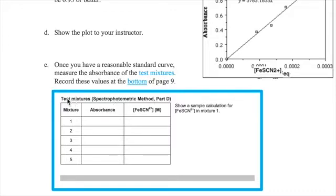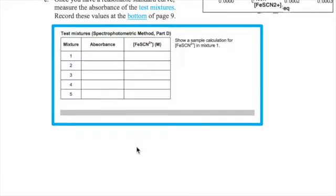The table has the title test mixtures. If you have time, use the epsilon value that you get from your standard curve to calculate the concentration of the complex ion in your test mixtures. Check your data with your instructor. That's the end of the experiment.